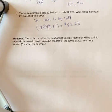Example four: The social committee has purchased six yards of fabric that will be cut into strips five inches wide to make decorative banners for the school dance. How many banners that are five inches wide can be made?